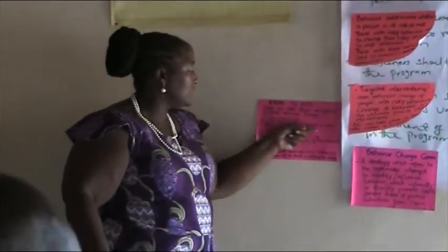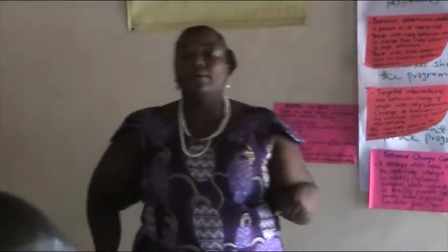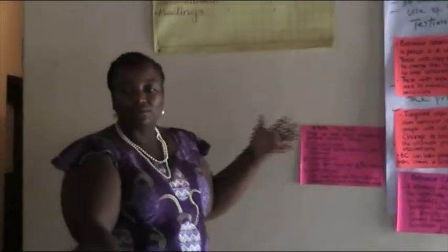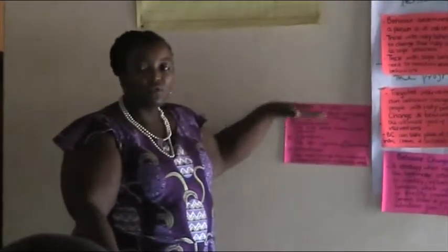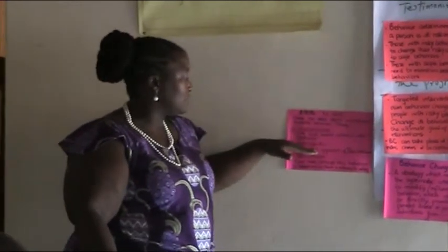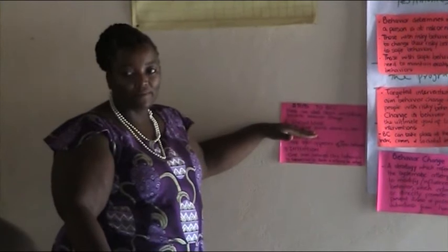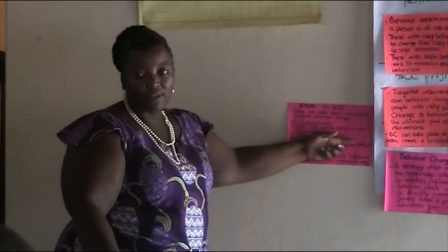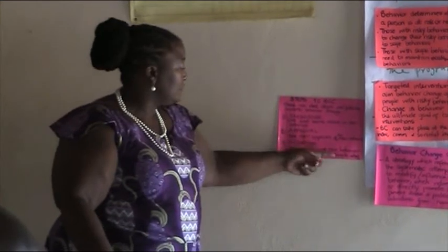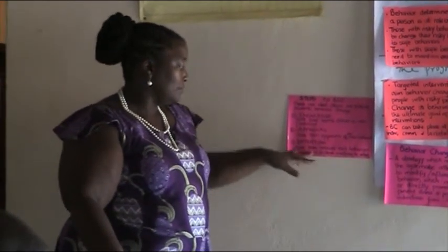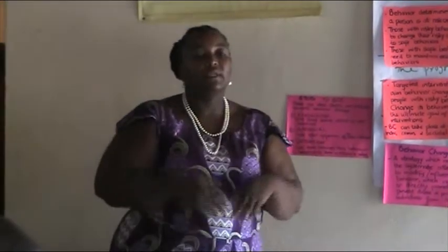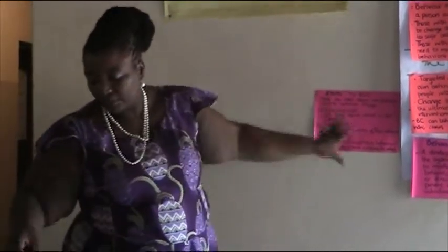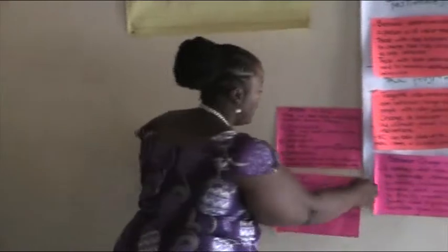This is the first step — one first learns about a new behaviour. For instance, we are talking about testing for HIV. Some people don't care about knowing their status, but once you communicate that it is important, they learn the importance of testing for HIV. And then they approve — they need to approve that this really is something that is worth trying.